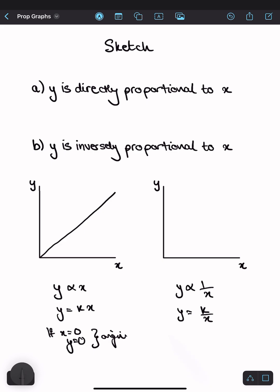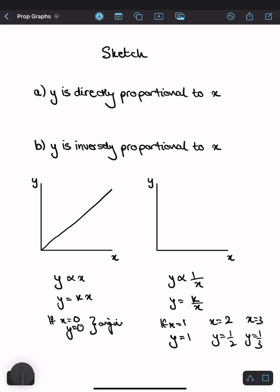So now let's take a look at this. If x is 1, y is going to be equal to 1. Let's say k is 1. If x is equal to 2, y is equal to a half. If x is 3, y is equal to a third. Notice the difference between these is not the same. So it's not a linear curve.